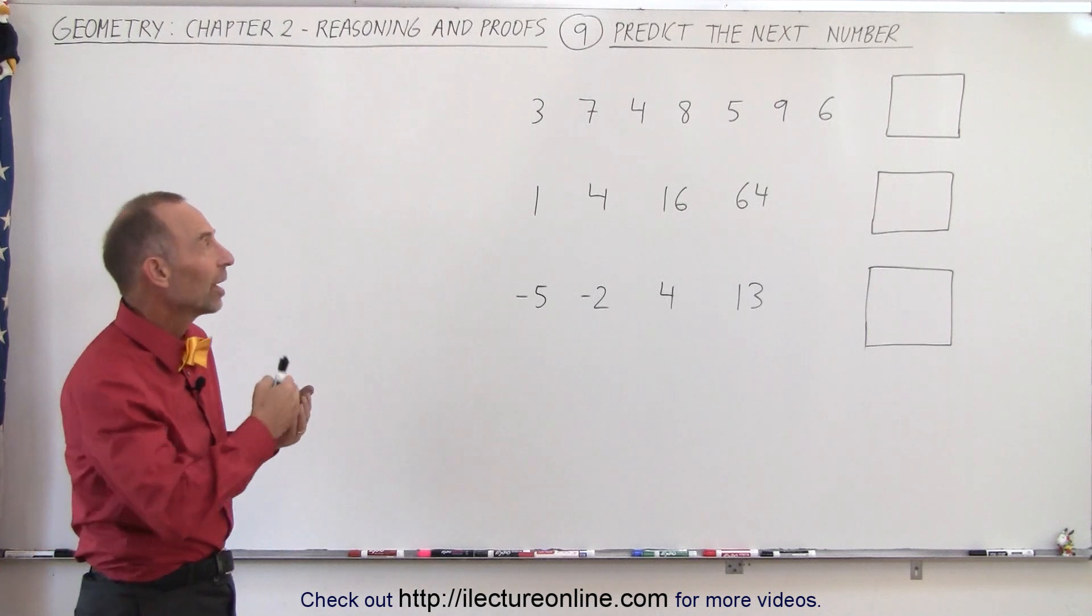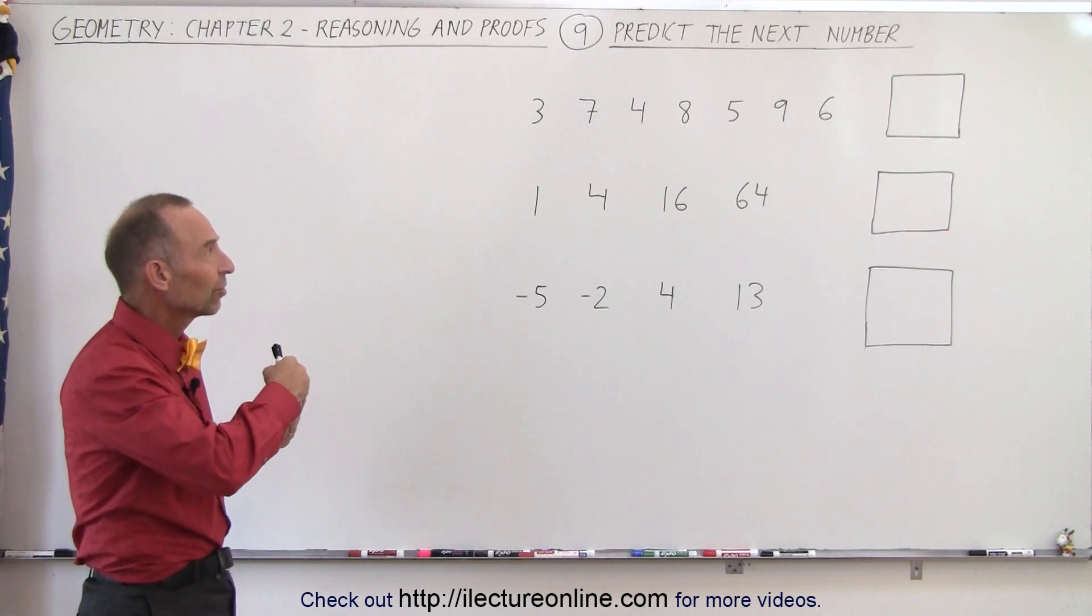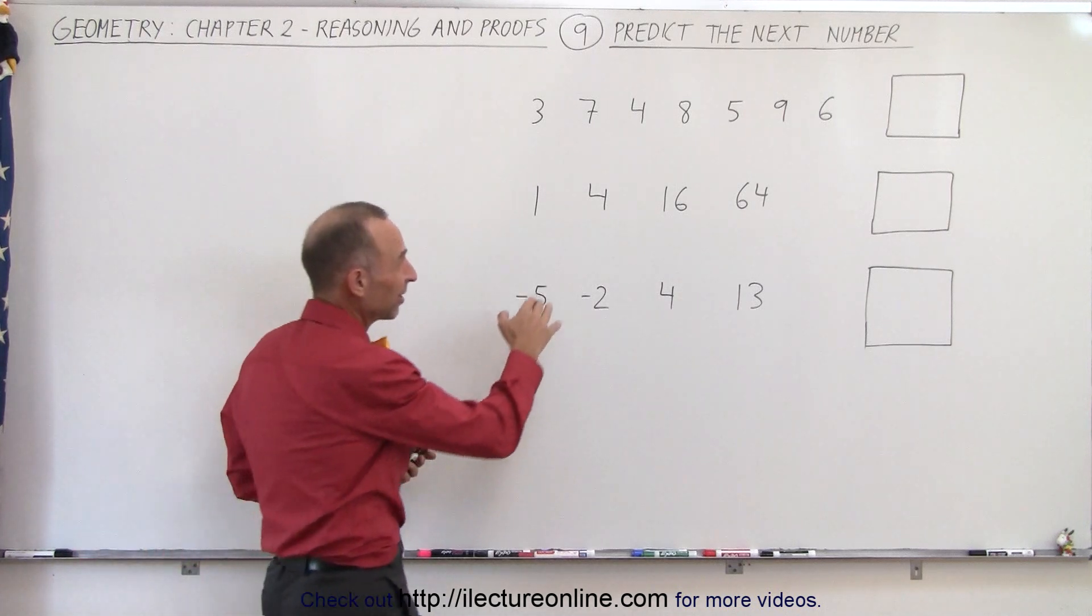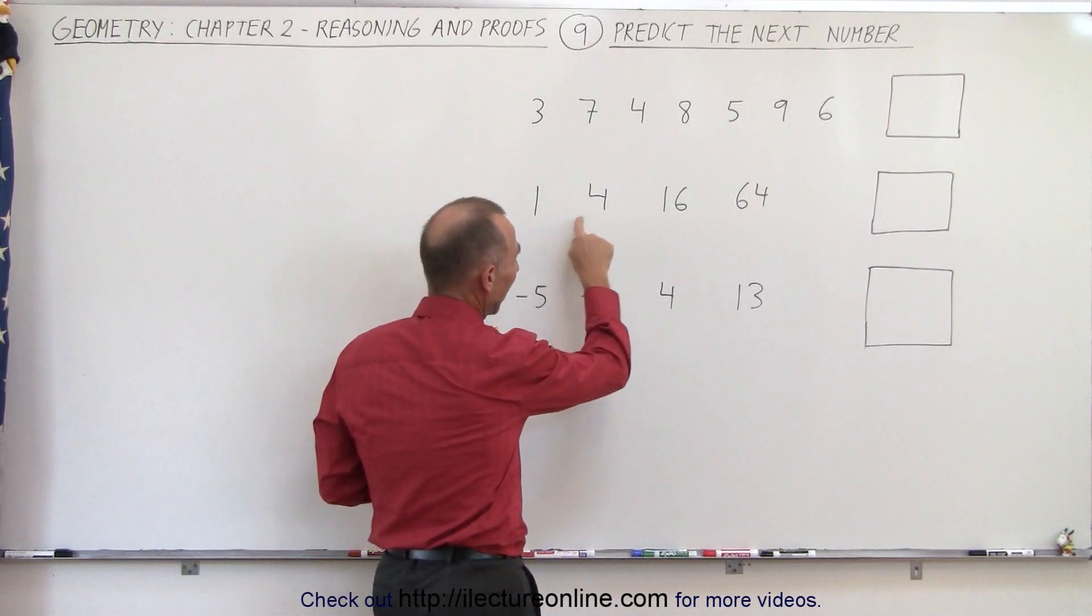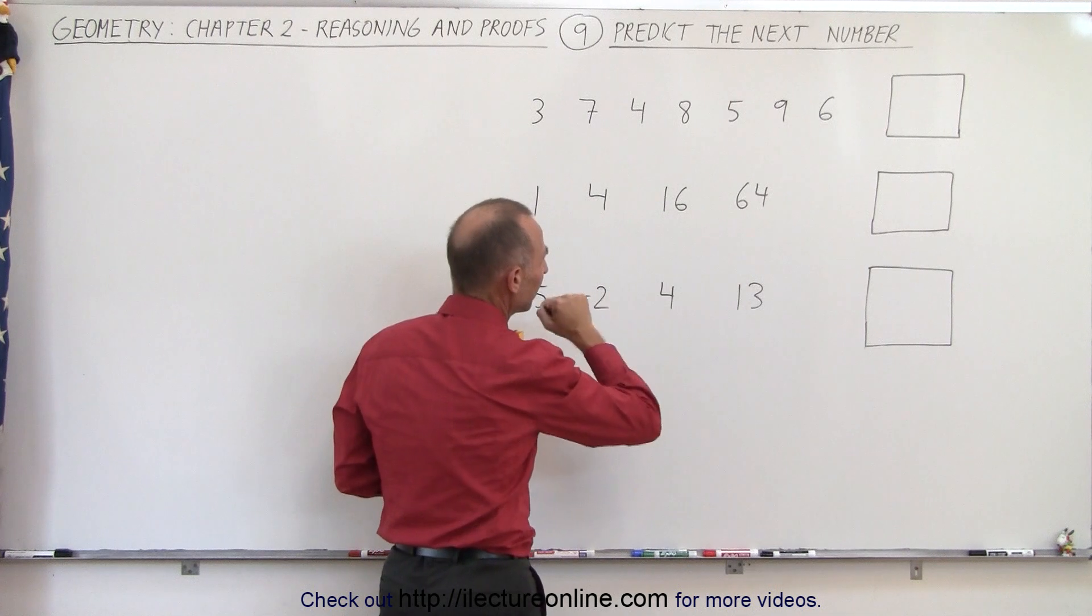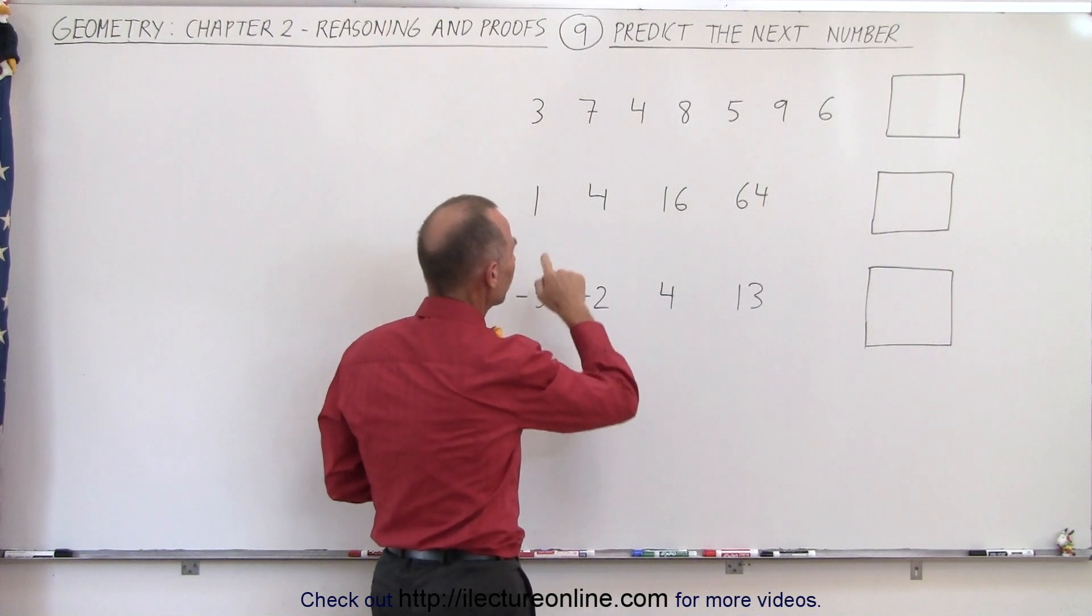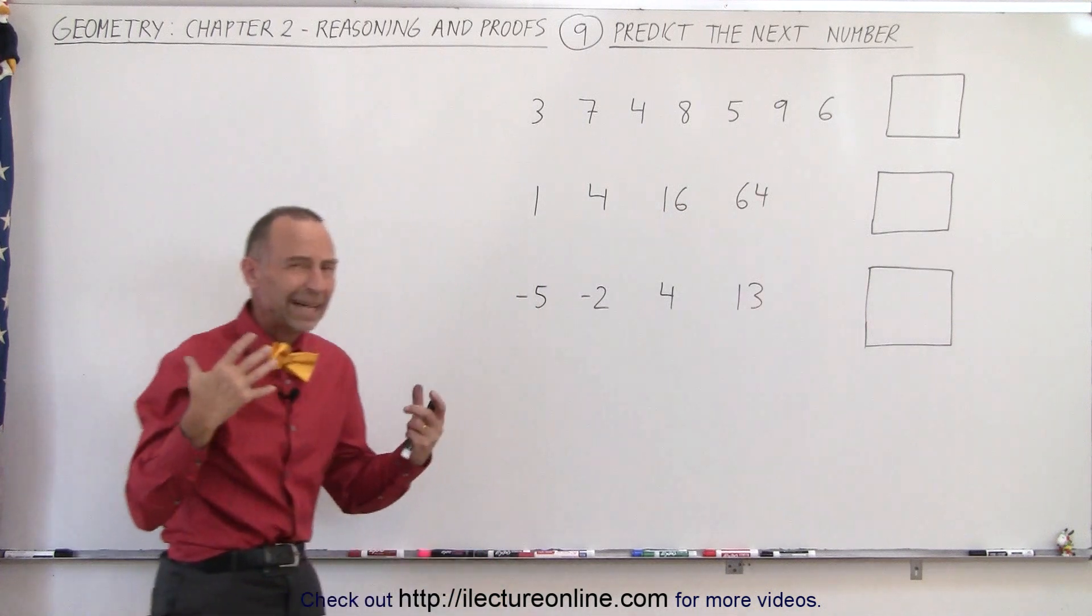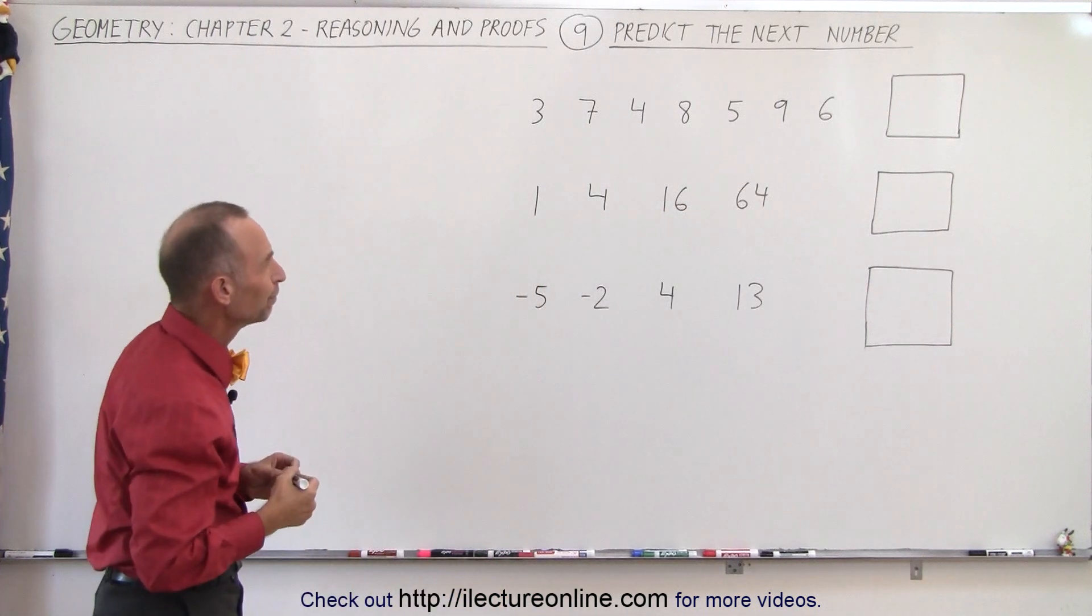Well one thing you could do is see how much the next number increases relative to the previous number. Sometimes you can take a look and say well if I see how much is added to it, that doesn't seem to make a lot of sense, but how much do I have to multiply this one to get the next number and is there a pattern. So those are the kind of things that should be going on in your head.